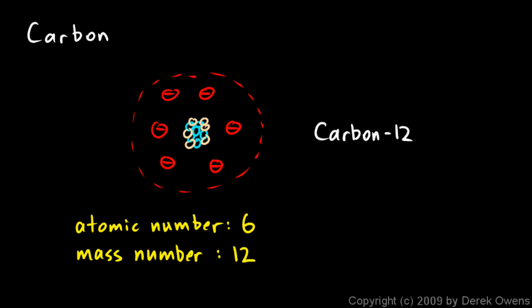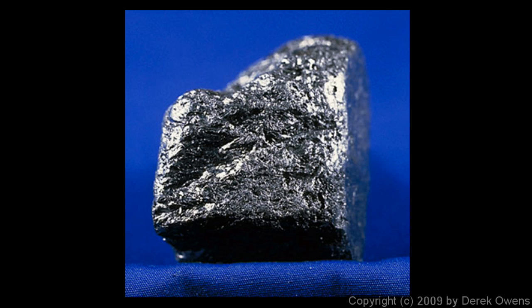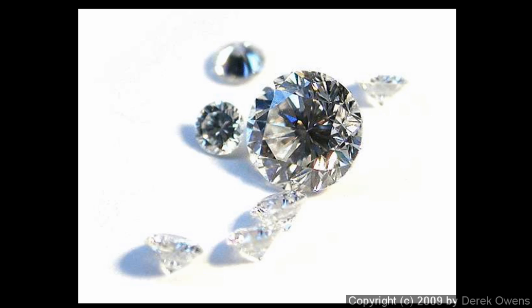Now carbon can exist in a variety of forms. This type of carbon, carbon-12, can show up in several different forms. Here's a picture of a piece of graphite. Carbon-12 atoms can be arranged in a structure to form graphite, and they can also be arranged to form diamond. And here's a picture of some diamonds. Interestingly, graphite is completely opaque, which means no light goes through it. And diamond is completely transparent, which means light travels through it perfectly.